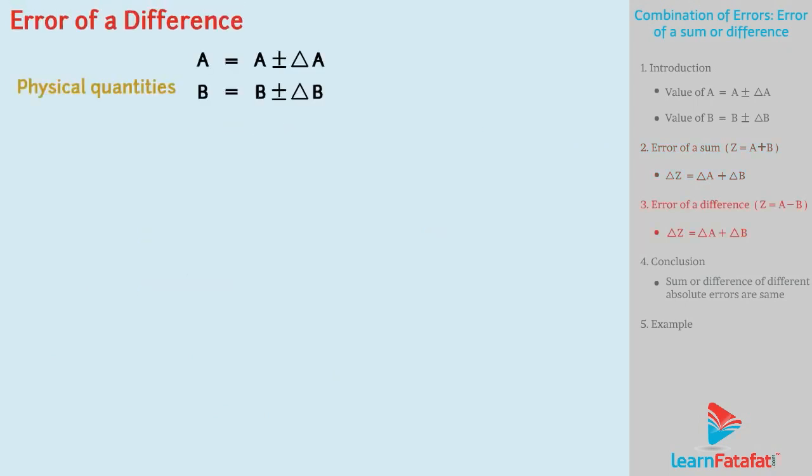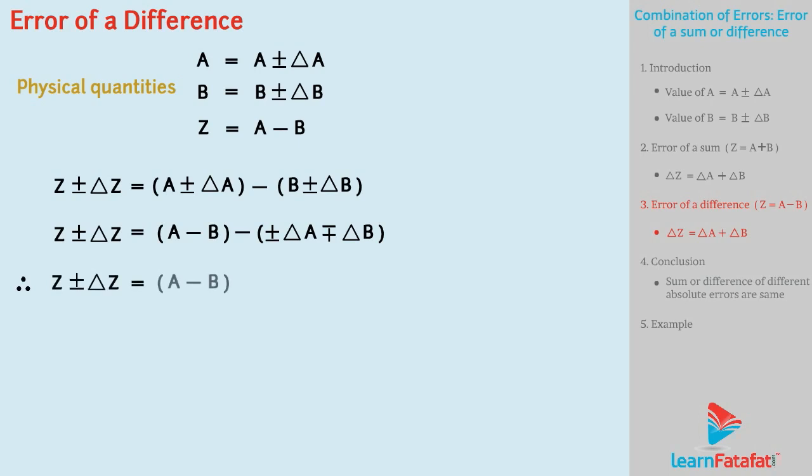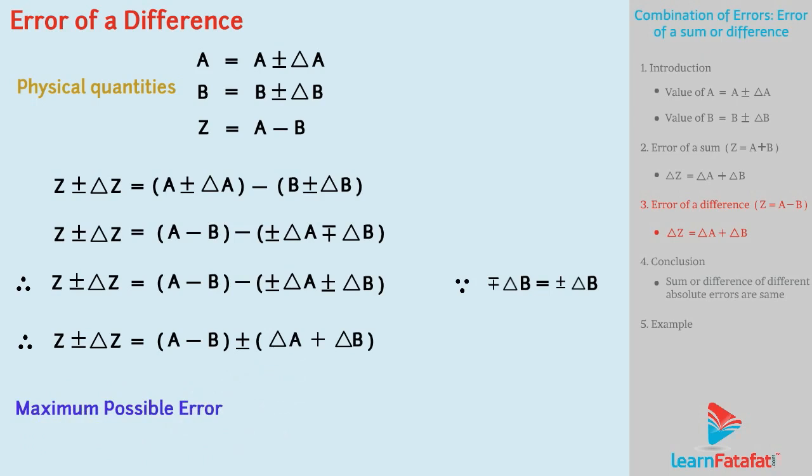In case of error of a difference, we will subtract the two physical quantities. That is, Z ± ΔZ = (A ± ΔA) - (B ± ΔB). So we get (A - B) ∓ (ΔA ∓ ΔB). Therefore, (A - B) ± (ΔA ± ΔB). Since -∓ΔB equals ±ΔB, therefore (A - B) ± (ΔA + ΔB). Here, the maximum possible error in Z will be ΔZ = ΔA + ΔB. Let's call this equation number 2.